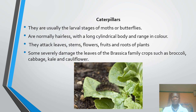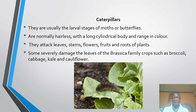Number two, we shall discuss caterpillars. They are usually the larval stages of moths and butterflies. They are normally hairless with a long cylindrical body and range in colour. Caterpillars can attack leaves, the stem of the plant, the flower, fruit or root of the plant.